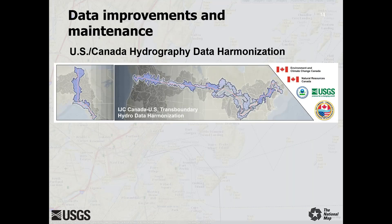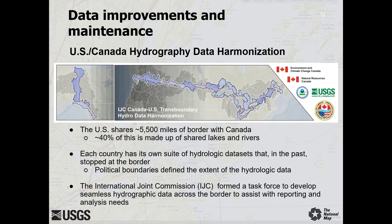Hydrologic units do not follow political boundaries and regularly cross international borders. The next slides illustrate how WBD data are being standardized across the border with Canada. A similar process was also employed for units along the border with Mexico. The U.S. shares approximately 5,500 miles of border with Canada. Forty percent of this is made up of shared lakes and rivers. Each country has its own suite of hydrologic datasets that in the past stopped at the border, so that political boundaries defined the extent of hydrologic data.